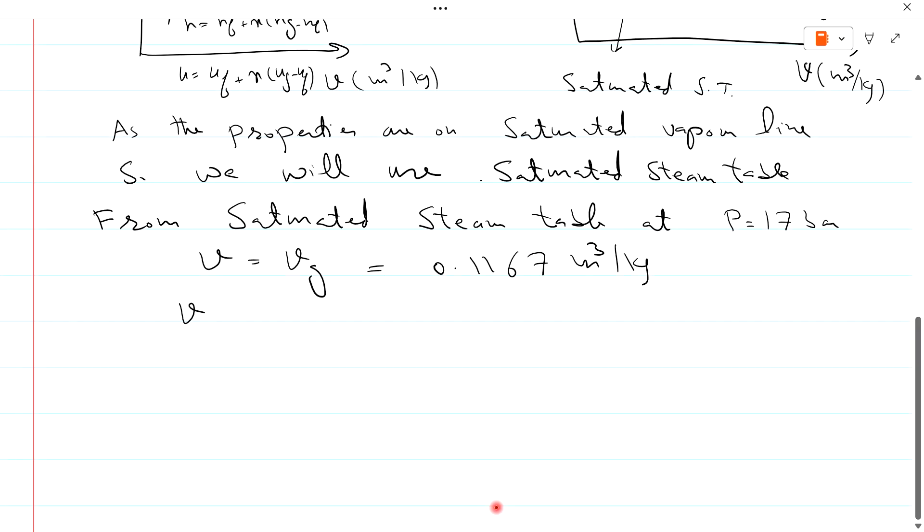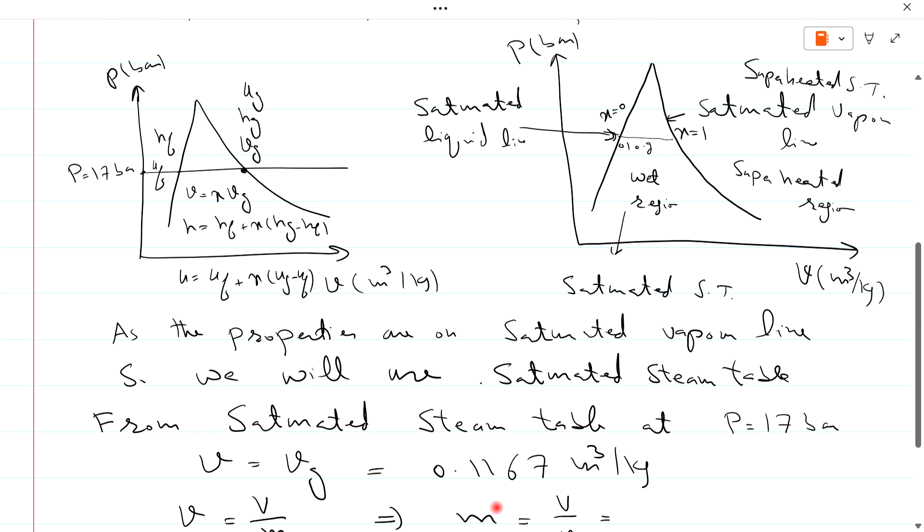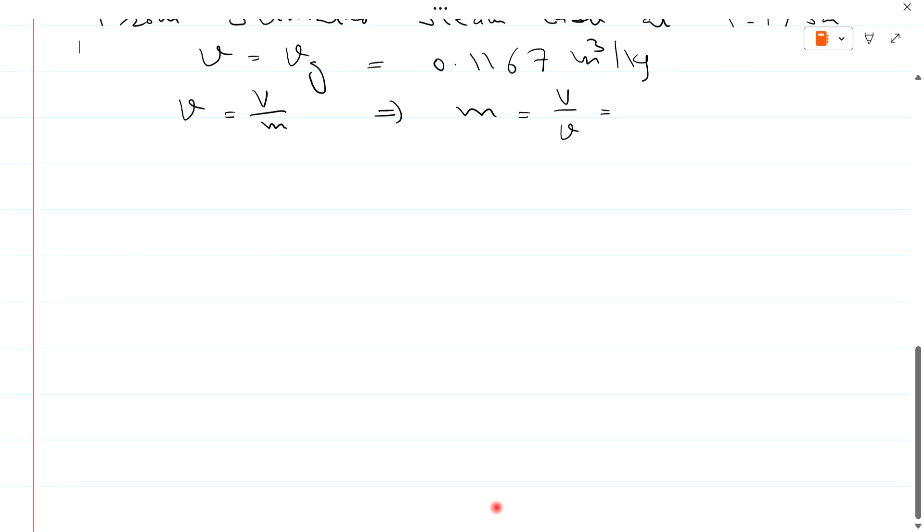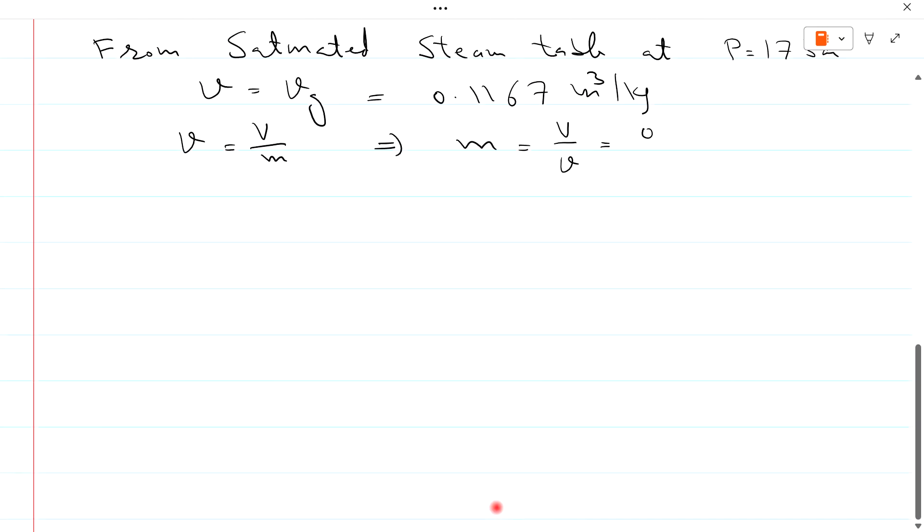So we know that specific volume is equal to total volume divided by mass. Rearrange this equation so mass will be equal to total volume divided by specific volume. Total volume is given to us as 0.03 cubic meter.